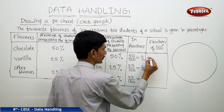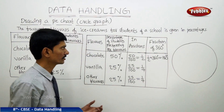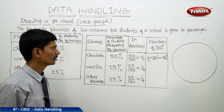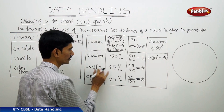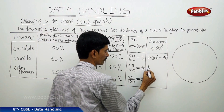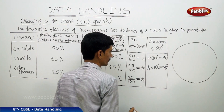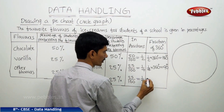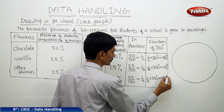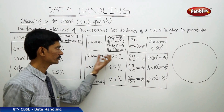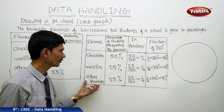Now we find the central angle for each sector. For chocolate: 1 by 2 into 360 degrees equals 180 degrees. For vanilla: 1 by 4 into 360 degrees equals 90 degrees. For other flavours: 1 by 4 into 360 degrees also equals 90 degrees. So the angles are 180°, 90°, and 90° for chocolate, vanilla, and other flavours respectively.